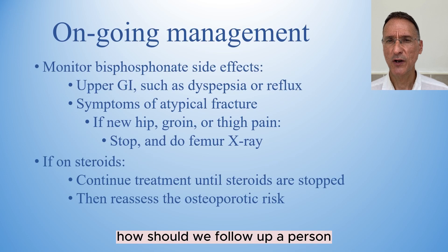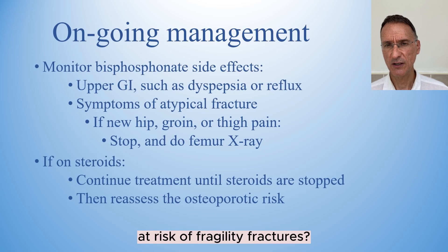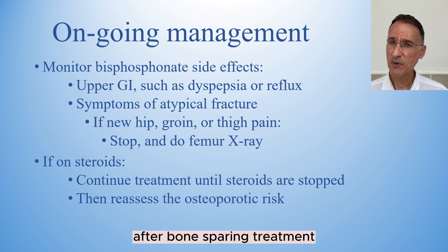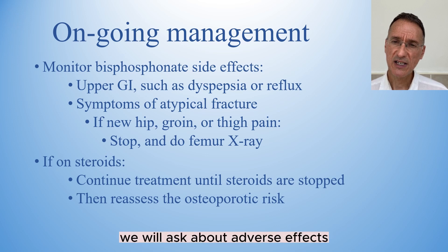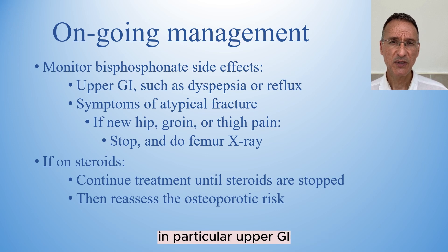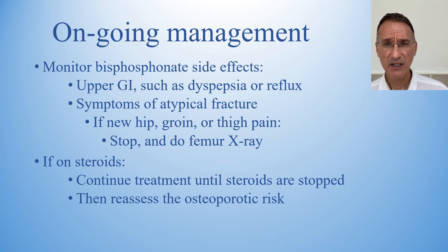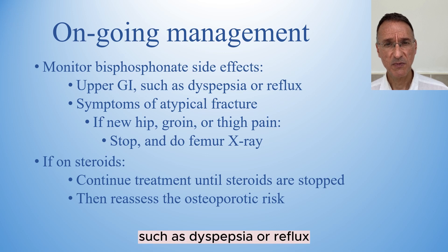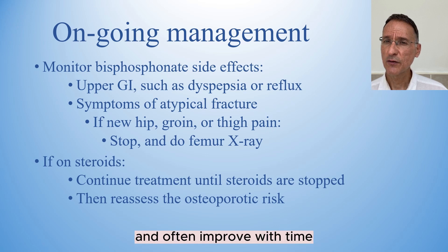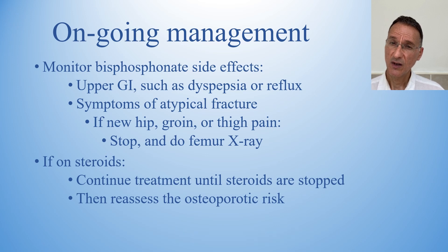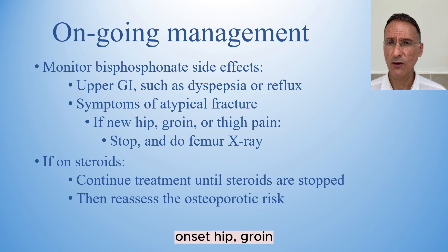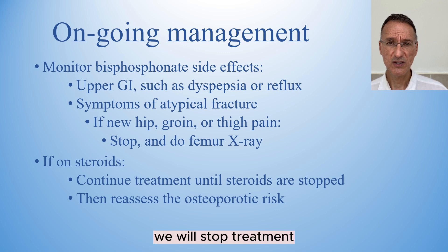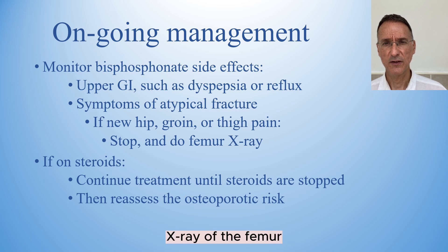How should we follow up a person at risk of fragility fractures? After bone-sparing treatment, we will ask about adverse effects, in particular upper GI symptoms such as dyspepsia or reflux. These are common initially and often improve with time. We should also watch for symptoms of atypical fractures, including new onset hip, groin, or thigh pain. If this occurs, we will stop treatment and arrange an x-ray of the femur.